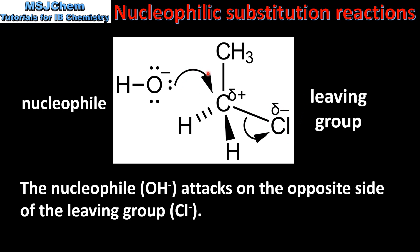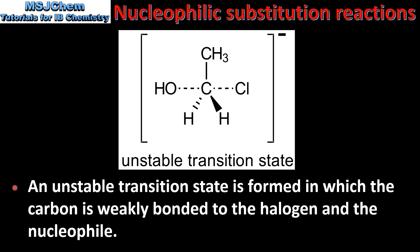The curly arrows represent the movement of a pair of electrons. An unstable transition state is formed in which the carbon is weakly bonded to the halogen and the nucleophile. Here we have the unstable transition state — the hydroxide ion and the halogen are both weakly bonded to this carbon atom. The weak bonds are represented by dashed lines.